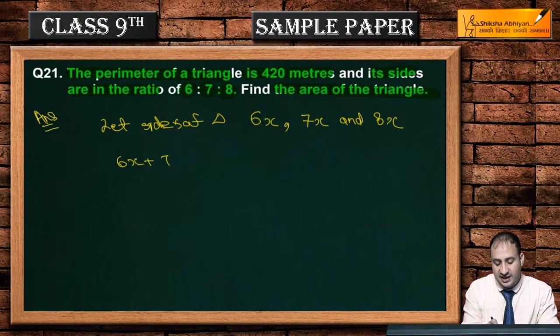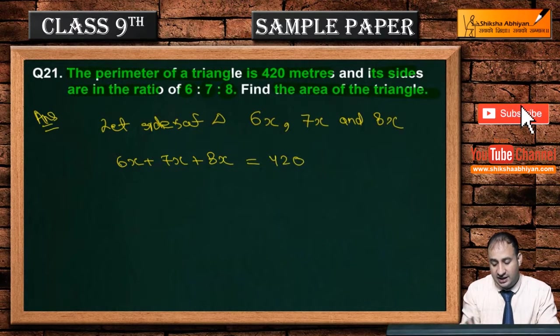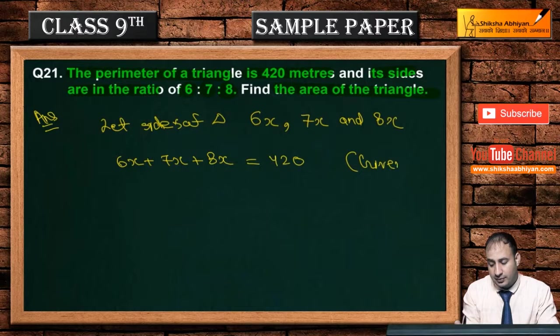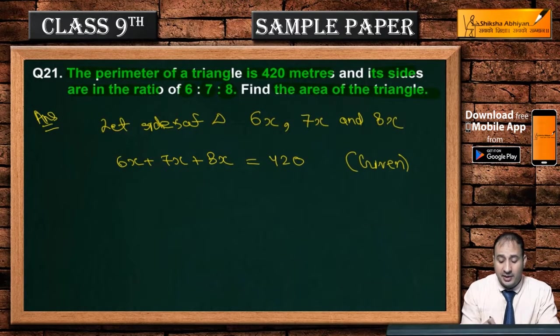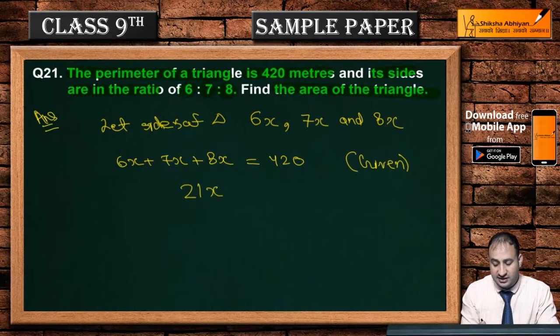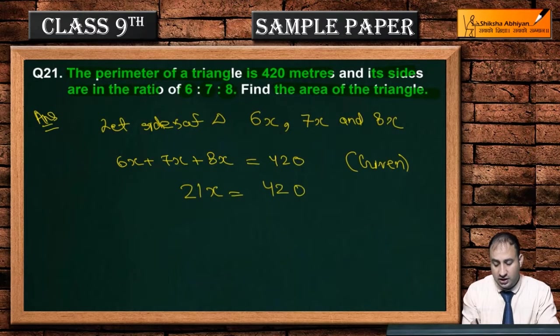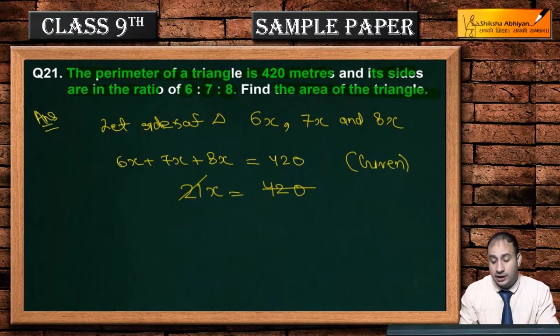For the area of the triangle, we use Heron's formula: area equals square root of s times s minus a times s minus b times s minus c. Here, s equals the semi-perimeter. So s equals 210. Now we calculate: 210 minus 120 equals 90, 210 minus 140 equals 70, and 210 minus 160 equals 50.